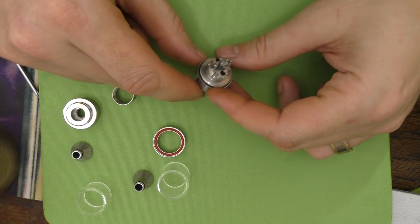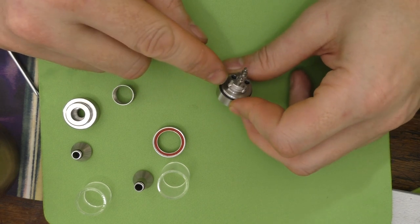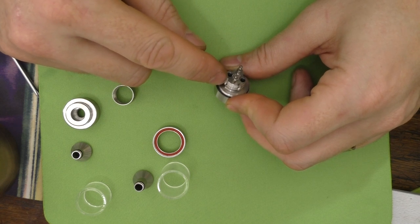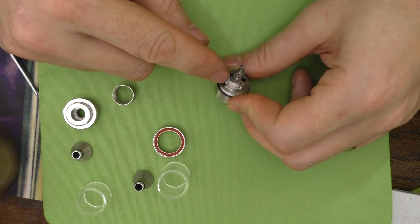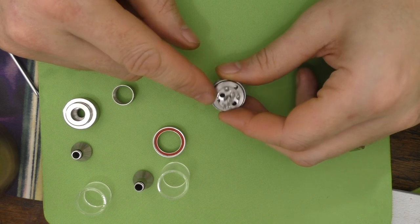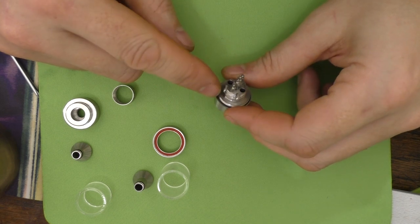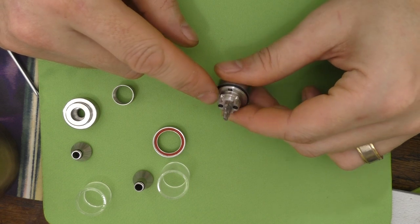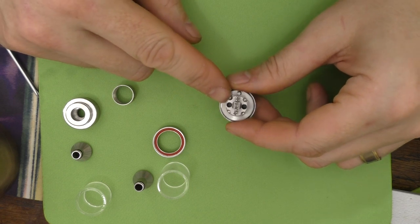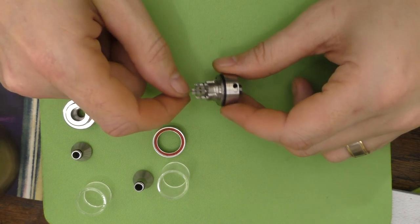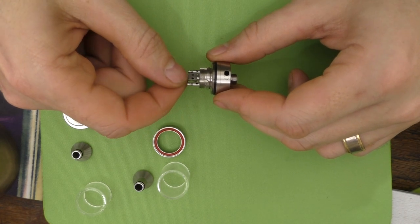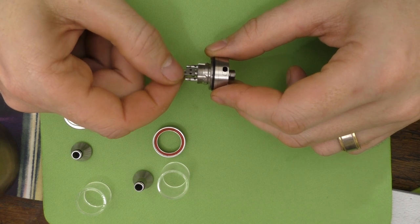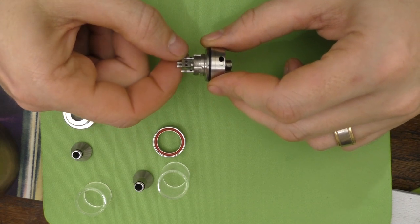But the thing I like about this is that the juice wells here, the channels, are really nice and deep. And that's meant that I don't have any problems with getting this to wick nicely.